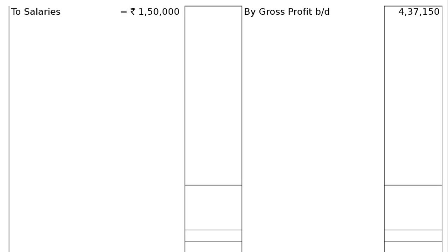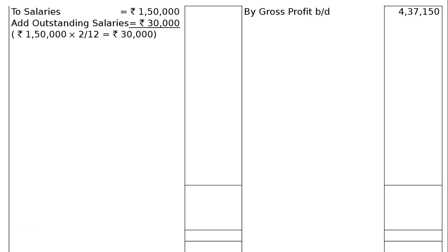Then to salaries Rs. 1,50,000, and add outstanding salaries. As per adjustment number 5, salaries for the months of February and March 2016 were not paid — 2 months. Hence, we have paid salary for 10 months out of the total yearly salary. So 10 months salary is Rs. 1,50,000. Dividing by 10 into 2, the monthly salary is Rs. 15,000, and for 2 months that is Rs. 30,000. Hence, outstanding salaries is Rs. 30,000. In the final column, we will have Rs. 1,80,000.